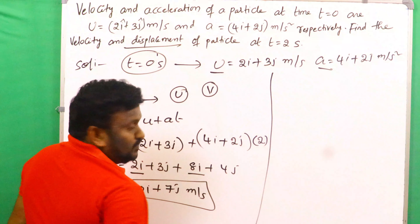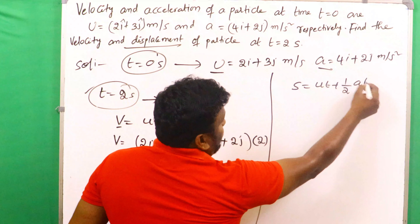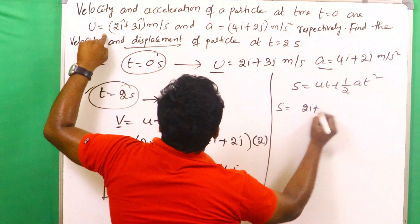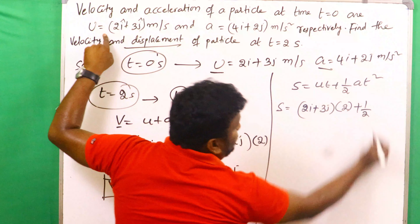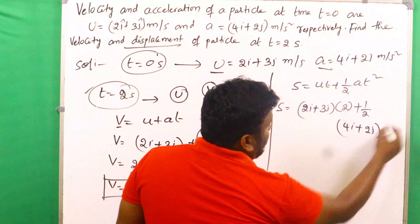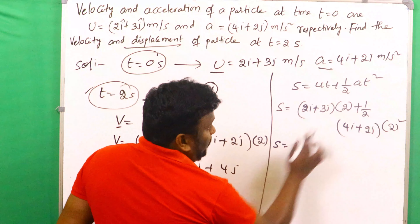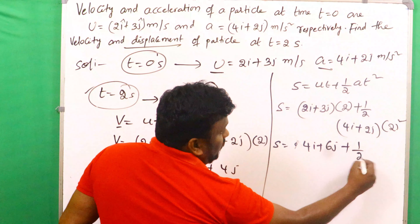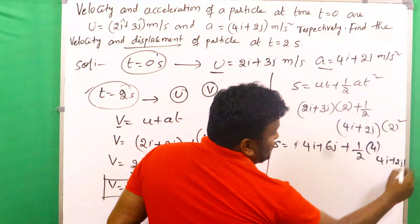For displacement, we use the equation s equals ut plus half at squared. So s equals u which is 2i plus 3j multiplied by 2, plus half, multiplied by a which is 4i plus 2j, multiplied by t squared where t equals 2, so t squared equals 4.